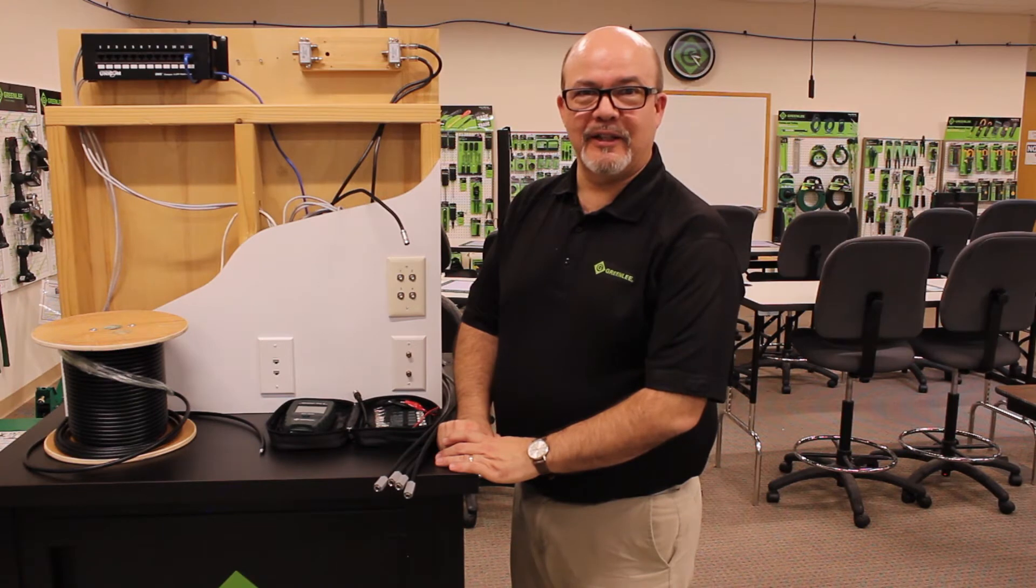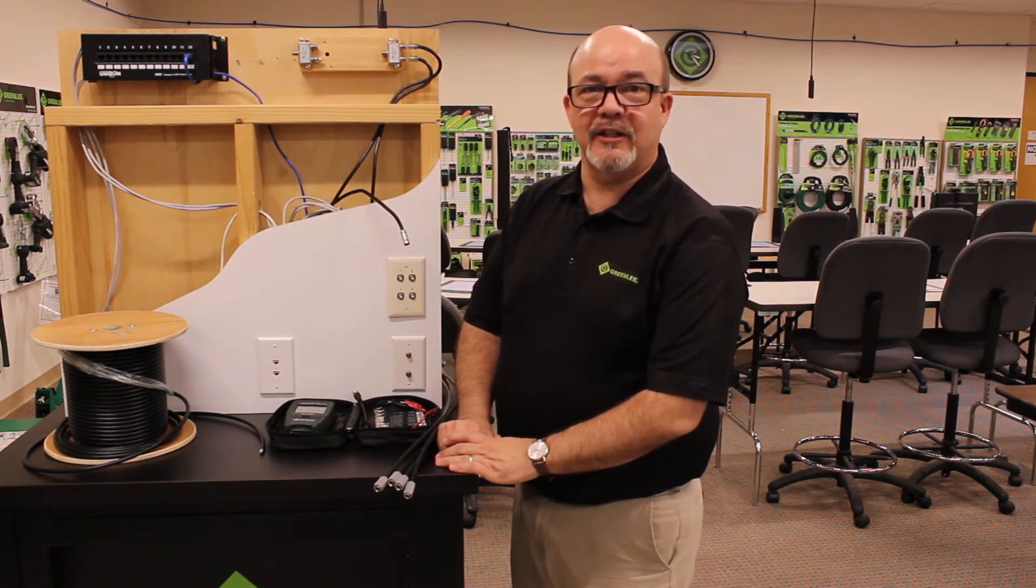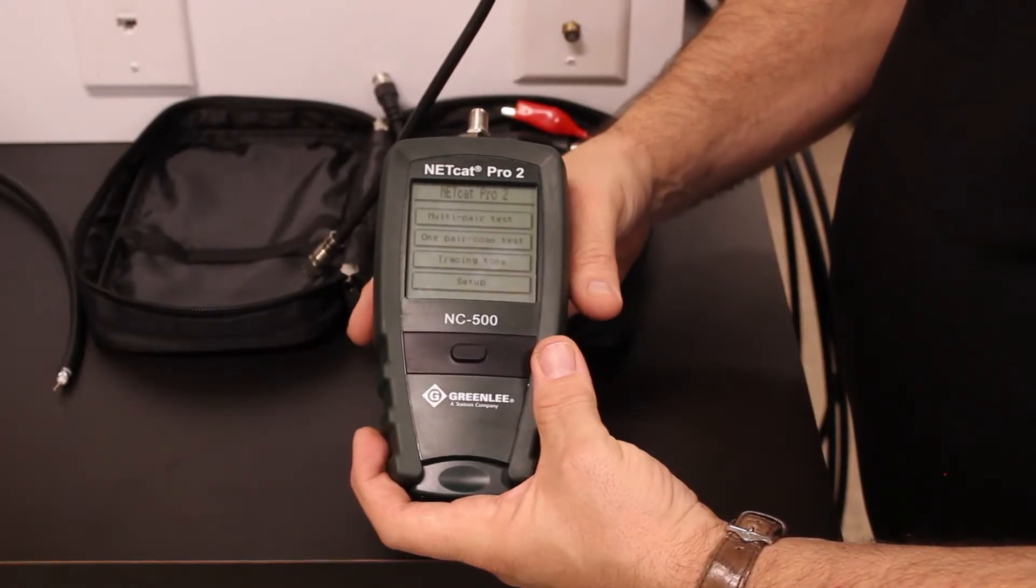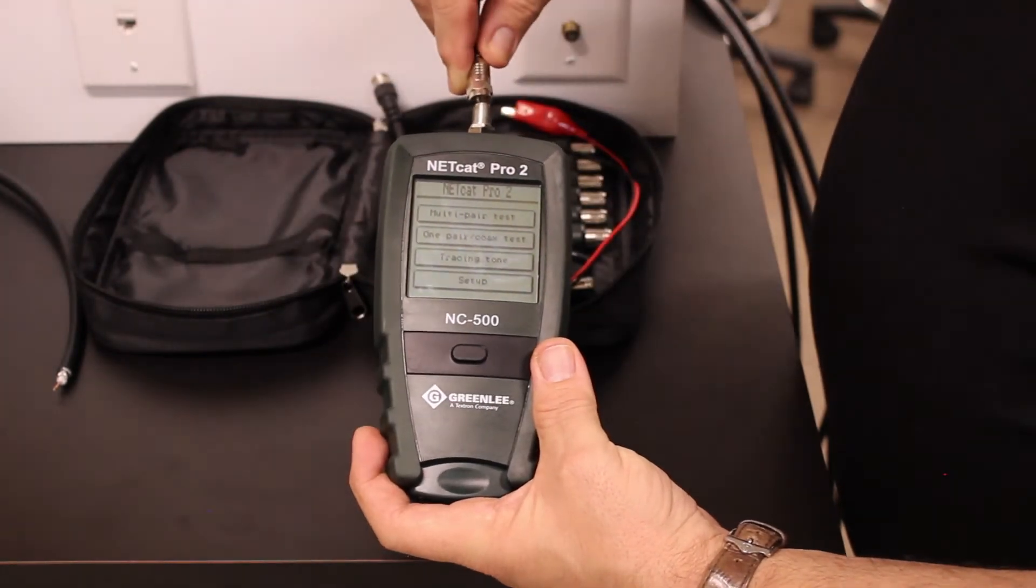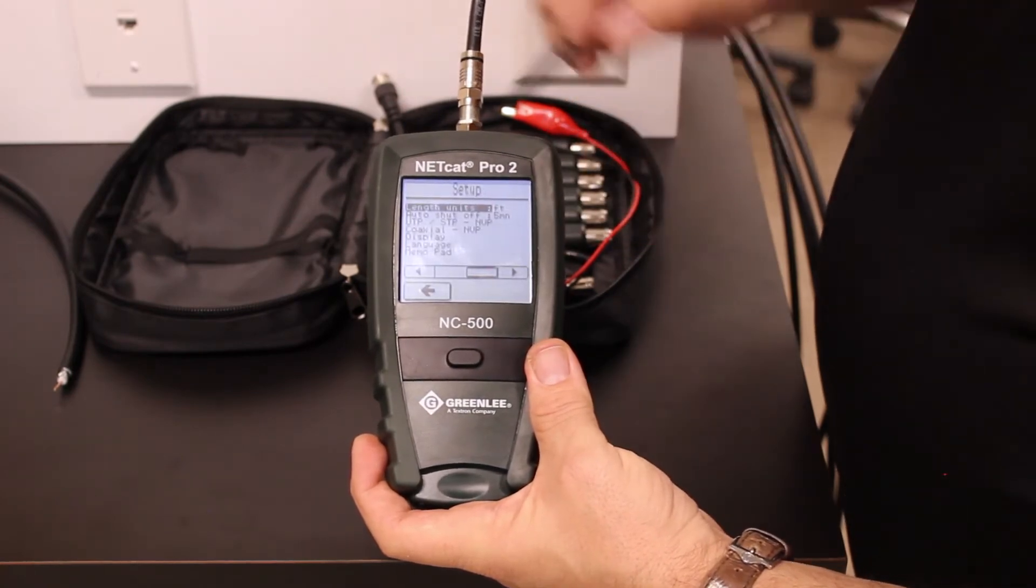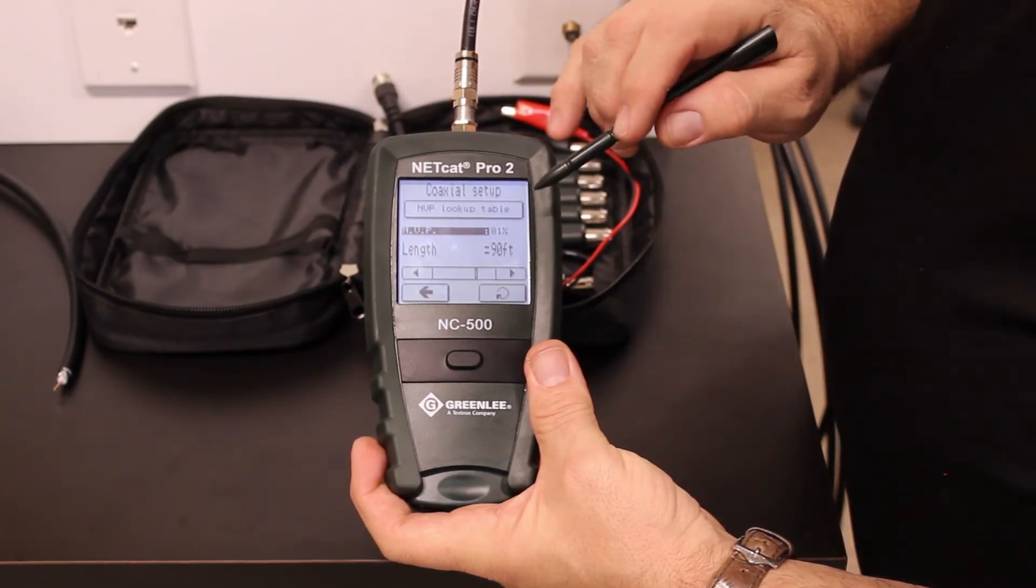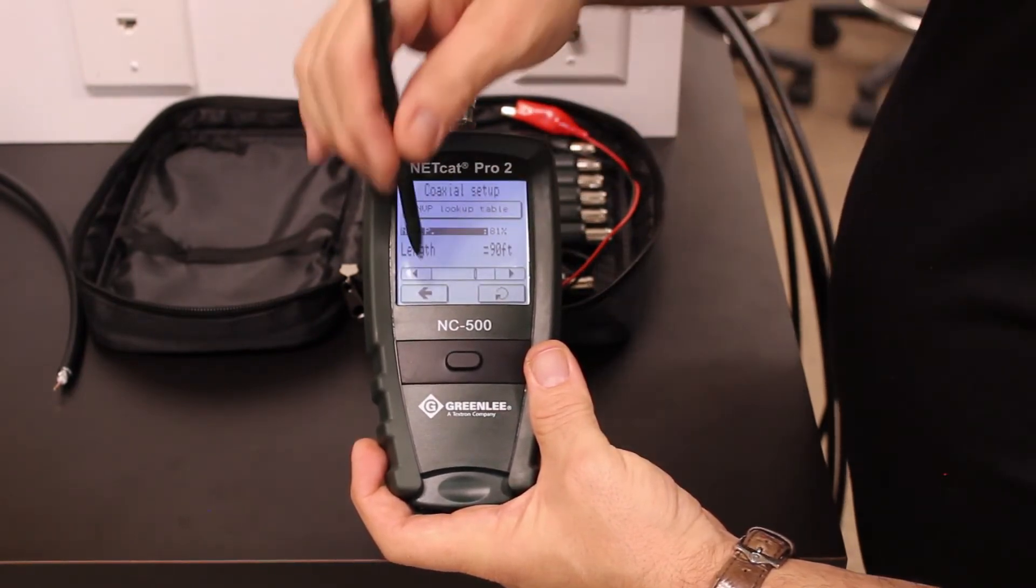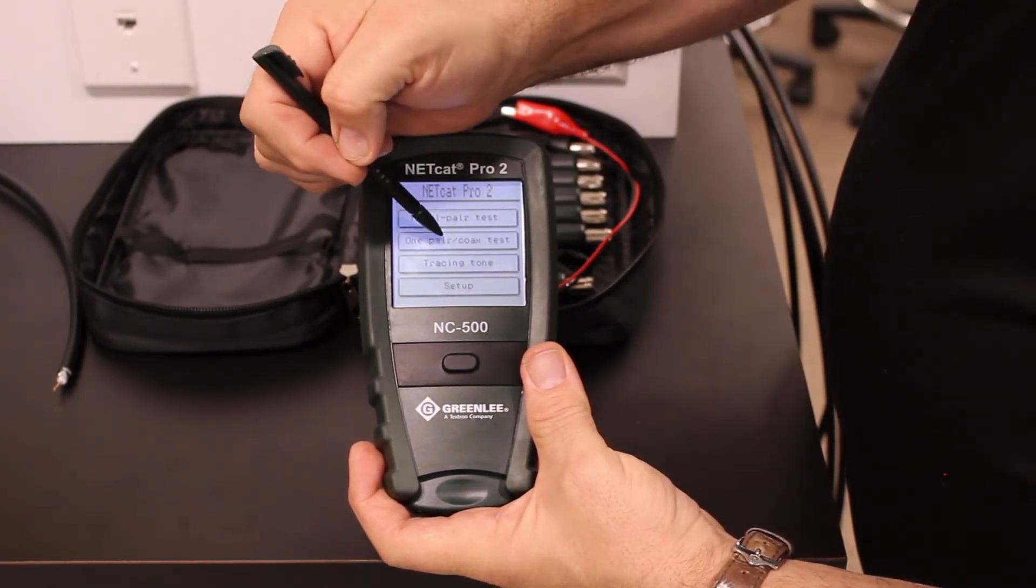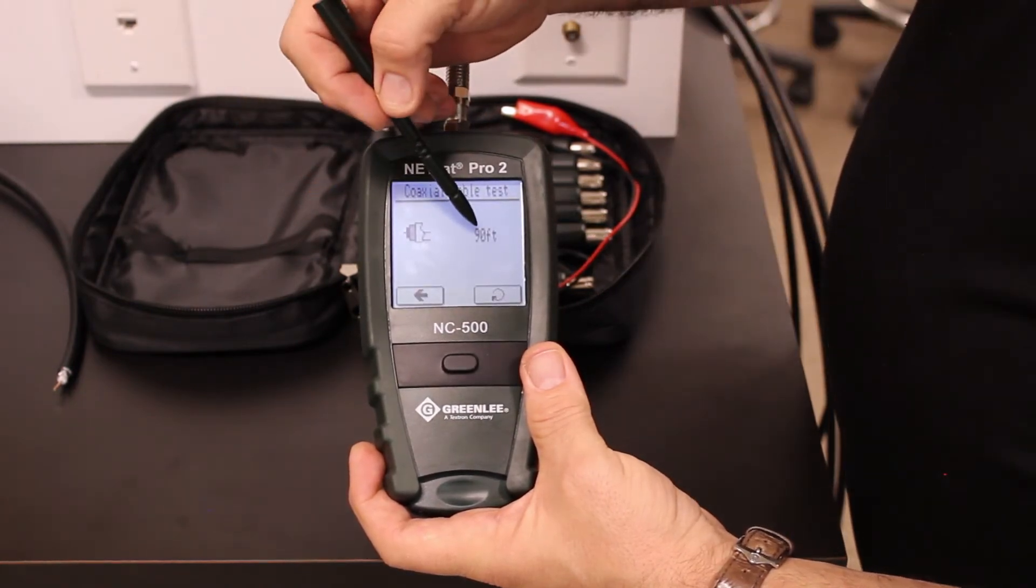The NC520 kit is also capable of measuring the length of both terminated and unterminated coax cables and data cables. To measure the length of a terminated coax cable, first connect the cable to the top of the unit. Verify that the correct velocity of propagation is set on the unit. The VOP of this particular cable is 81. It is selected at 81. Go back to the main menu, select the one pair coax test. The length of this cable is 90 feet.